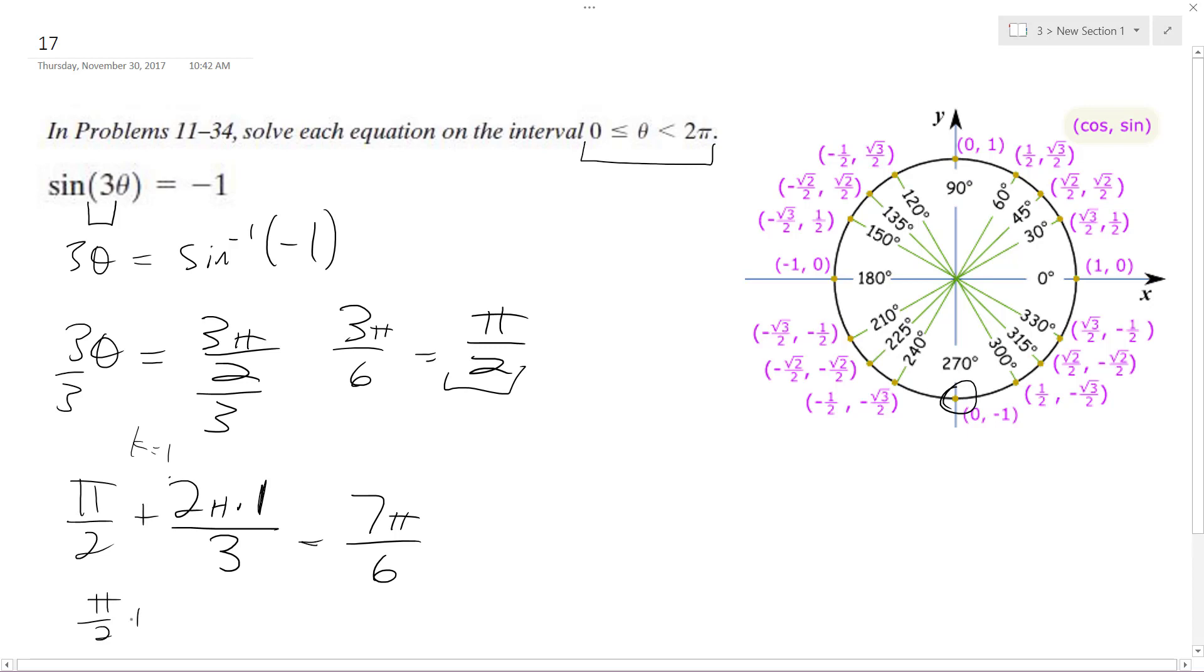And we have pi over 2 plus 2 pi times 2, which is k equals 2. So we get pi over 2 plus 4 pi over 3, and that gives us 11 pi over 6.